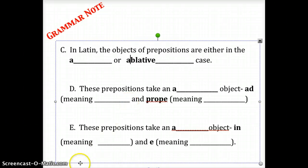These prepositions take an accusative object: ad, which means to or towards, and propae, which means near.